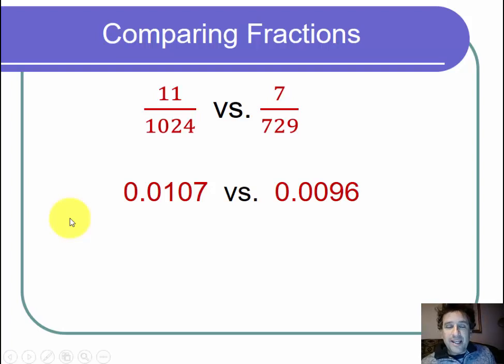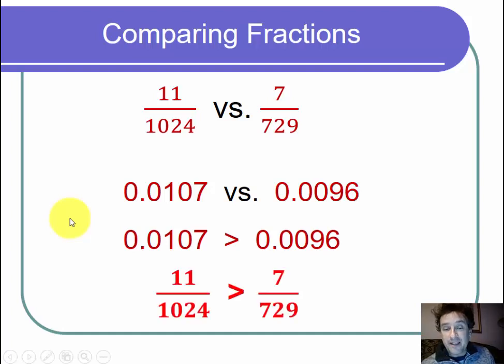Now we just want to compare these. If I just look at this, notice the first decimal place of each is a zero. The second decimal place of the first one is a one and of the second one is a zero. That tells us that this first decimal 0.0107 is greater than 0.0096. Now I can say that since these decimals compare this way, so must the fractions. So 11 over 1024 is greater than 7 over 729.